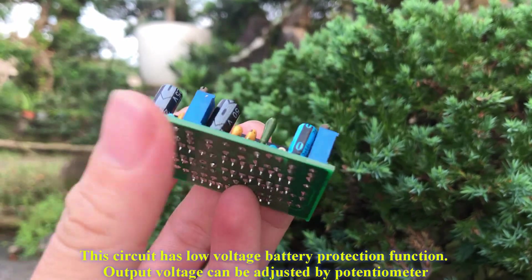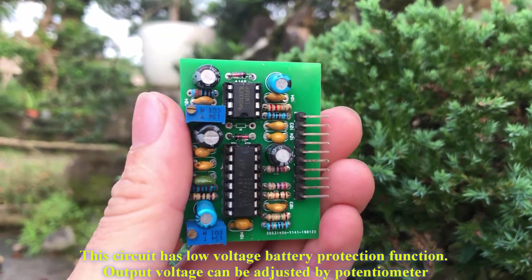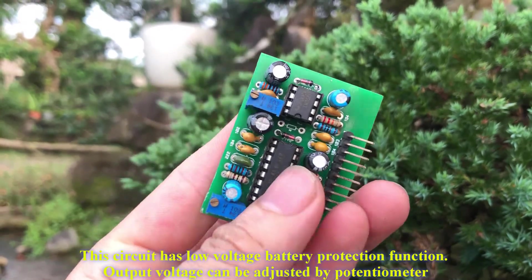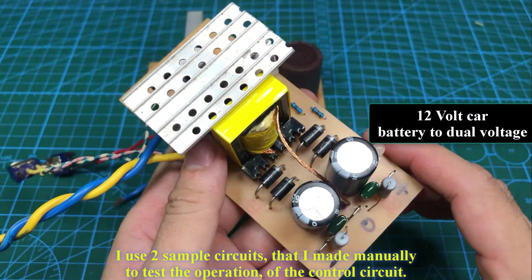This circuit has low voltage battery protection function. Output voltage can be adjusted by potentiometer. I use two sample circuits that I made manually to test the operation of the control circuit.